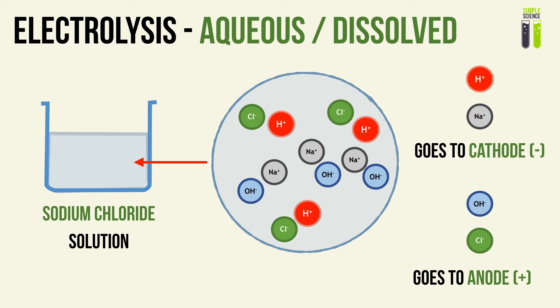So basically in solution you have four different types of ions: the OH- ion and the H+ which form the water, and the other two which form the ionic compound. In this case, we're looking at aqueous sodium chloride — sodium chloride dissolved in water — so basically salt water, brine.